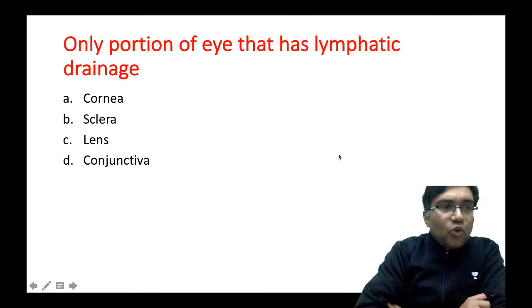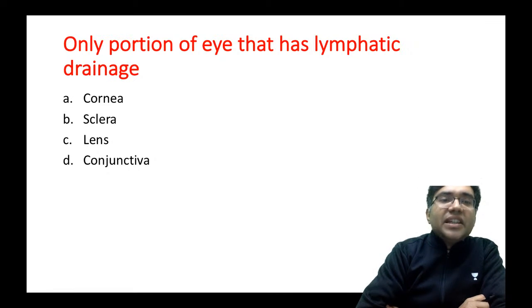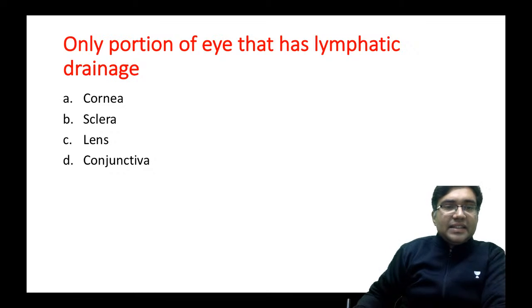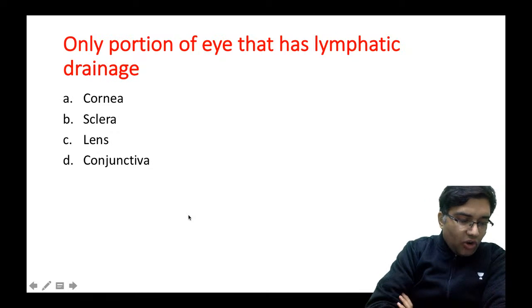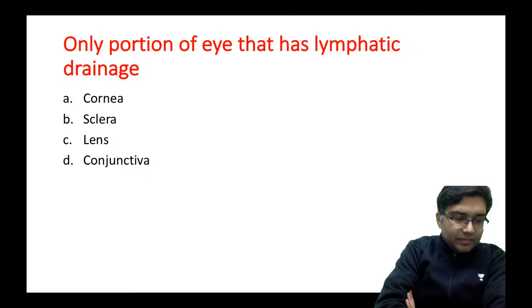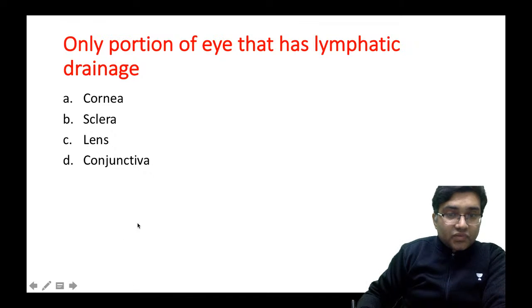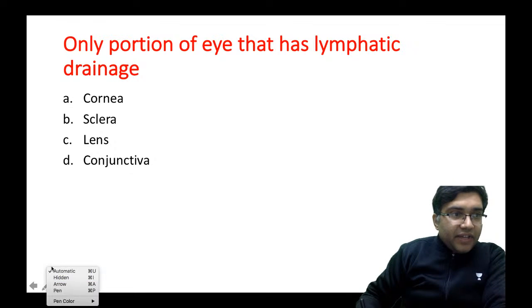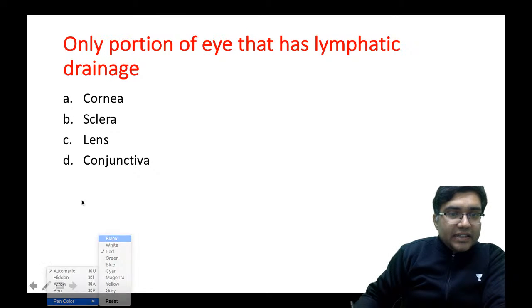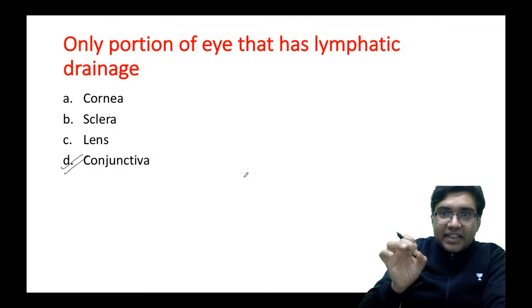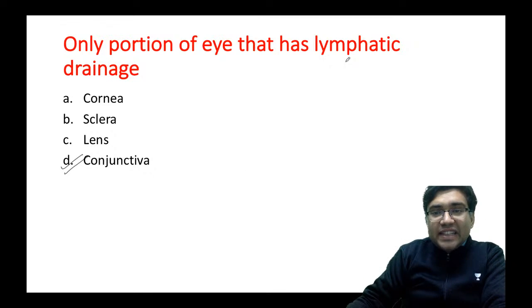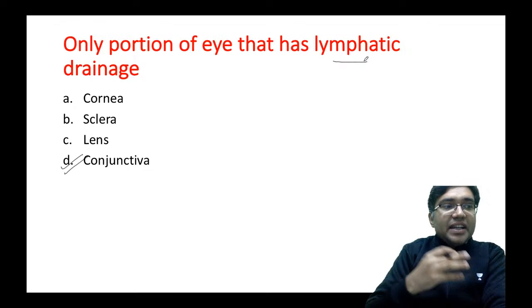The next question: which is the only portion of the eye that has lymphatic drainage? Options are cornea, sclera, lens, or conjunctiva. The answer is D — the conjunctiva is the only structure in the eye that has lymphatic drainage, nothing else.